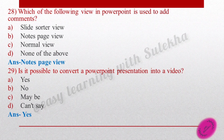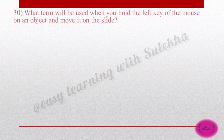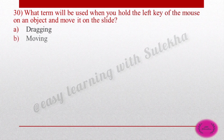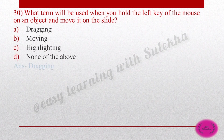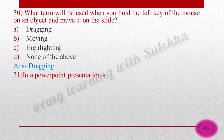Question 30: What term will be used when you hold the left key of the mouse on an object and move it on the slide? Options are: dragging, moving, highlighting, none of the above. The right answer is dragging — because we drag the mouse from one place to another.